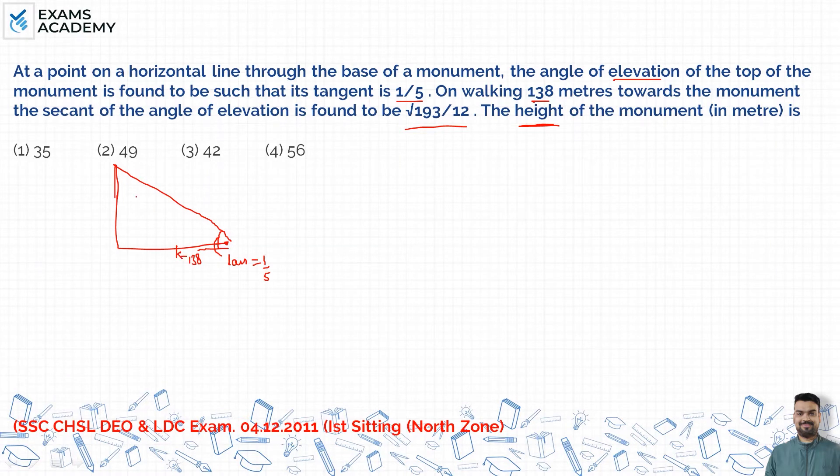This is an angle of elevation, and this is another angle of elevation. The angle of elevation changes to secant root 193 by 12. This is H, the height of the monument we will find. I will name the points A, B, C, and this point D.